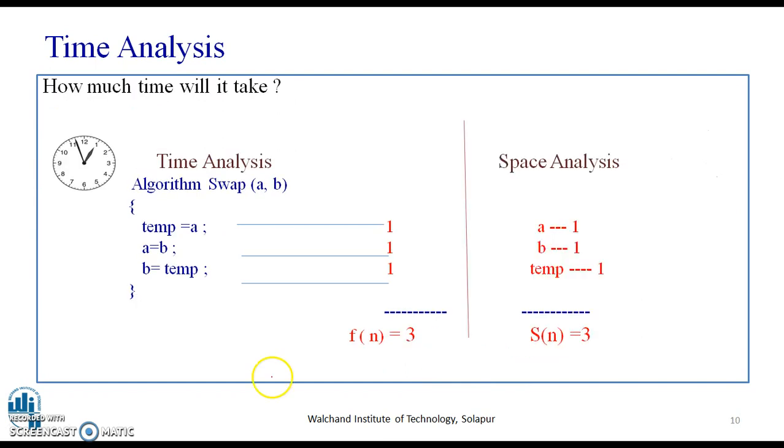We will consider the space analysis of the same algorithm. If we see here, there is one variable that is A, the second variable that is B, and here we have the third variable that is temp. Each of these requires one unit of space. Therefore, we say that the space S of n is equal to three. When we want to convert it, this three is nothing but a constant, that is O of one. So the time complexity of this loop is O of one. Also, the space complexity is O of one, that is constant.